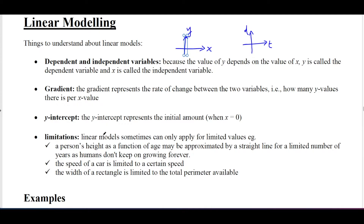There are some limitations of linear models. For example, a person's height as a function of age may be approximated by a straight line for a limited number of years, as humans don't keep growing forever. You may grow taller from when you're a baby, but this will only last for a few years — once you hit around age 20, you stop growing taller.